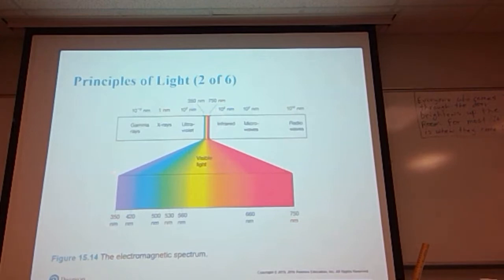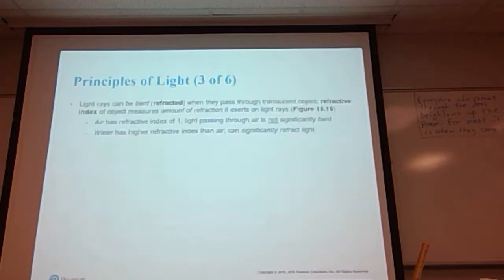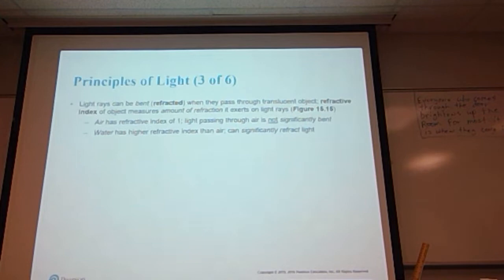Visible light goes from 350 nanometer wavelength to 750. I will never ask you to remember those numbers; I do however expect you to remember that blues and purples have short wavelengths and reds and oranges have long wavelengths. Light rays can be bent or refracted when they pass through some translucent object.